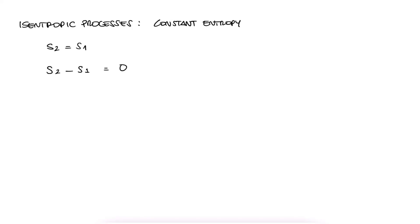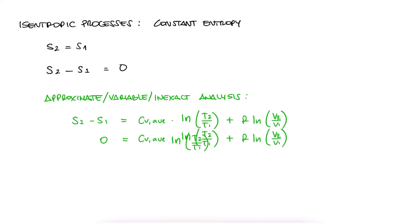And let's go over each one of the two cases. The first one is for the approximate analysis. With the expression for the approximate analysis, we see that log of T's is minus R over Cv average times log of v's.